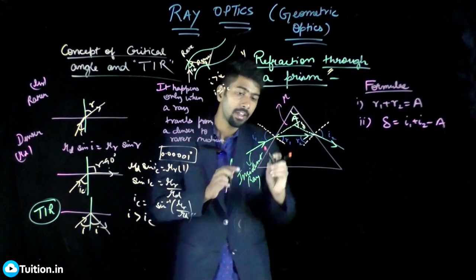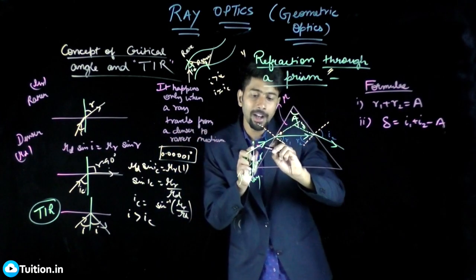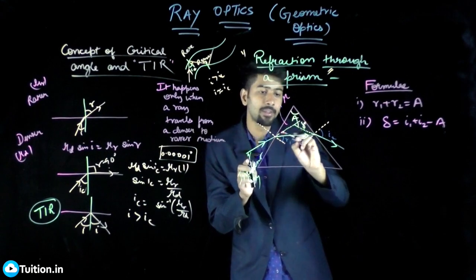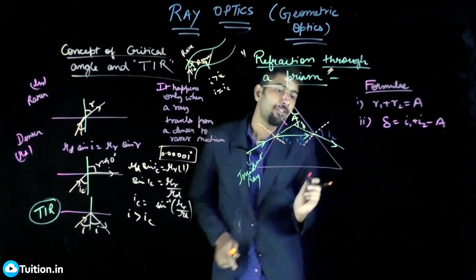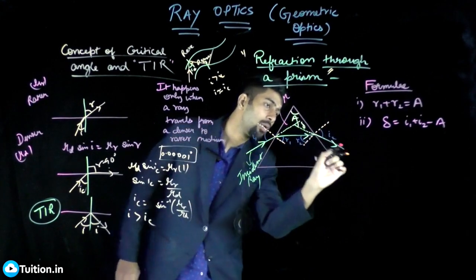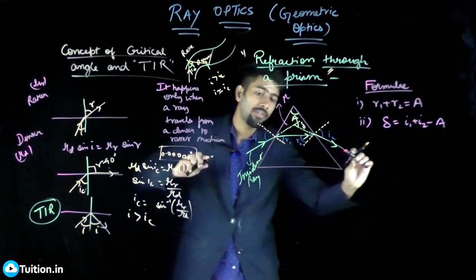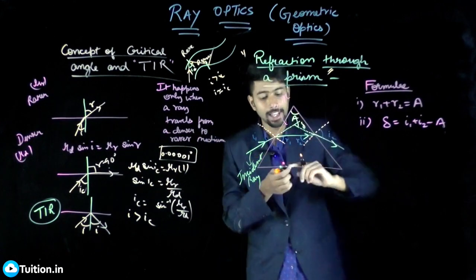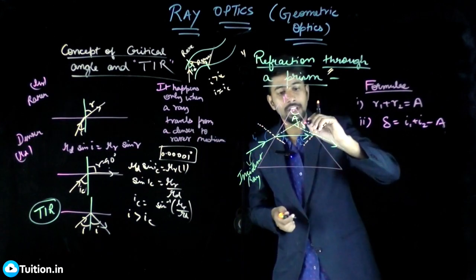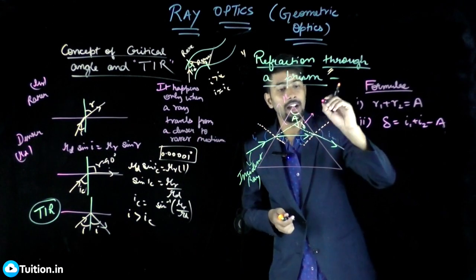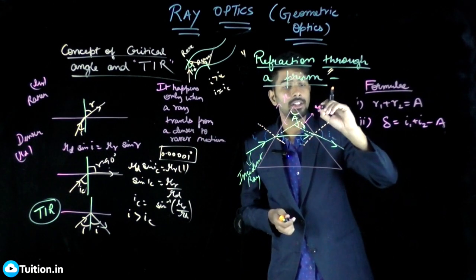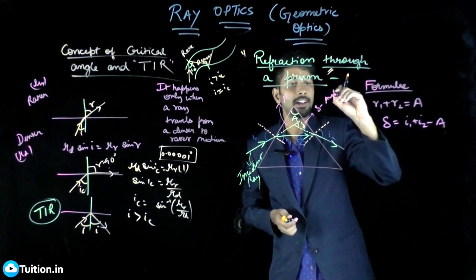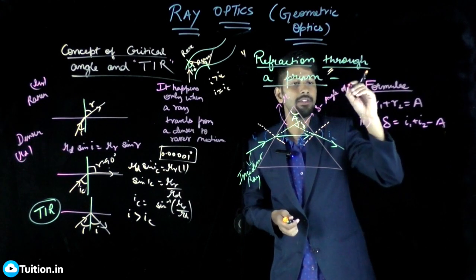Delta (δ) is the angle of deviation. If the ray had gone undeflected, it would have continued straight. But the ray actually emerges at a different direction. Joining the initial and final ray directions gives the angle of deviation δ — by how much the ray deviated.